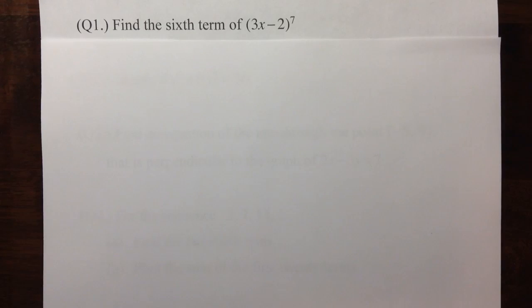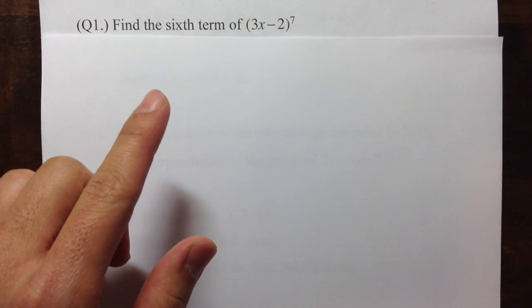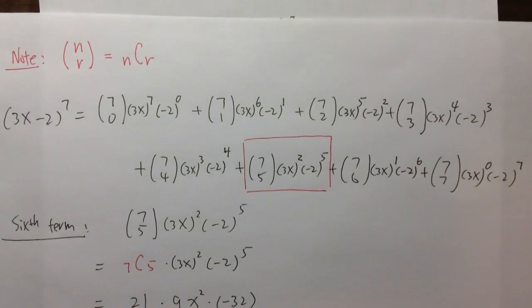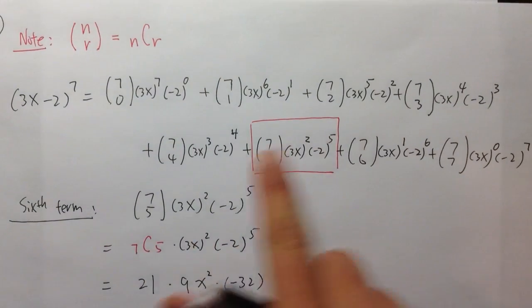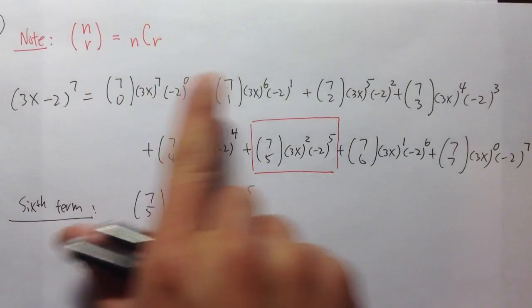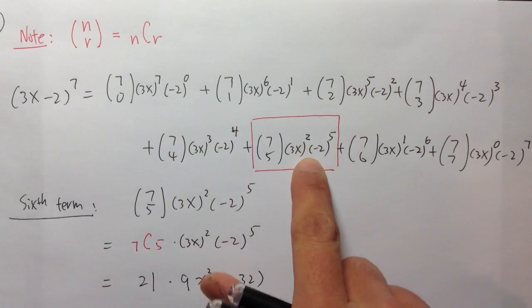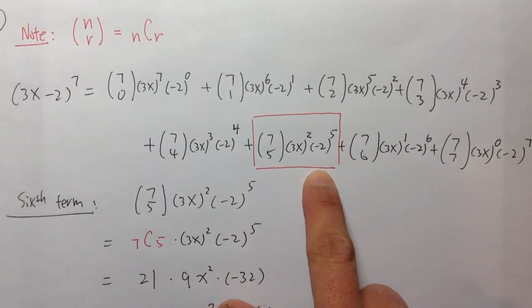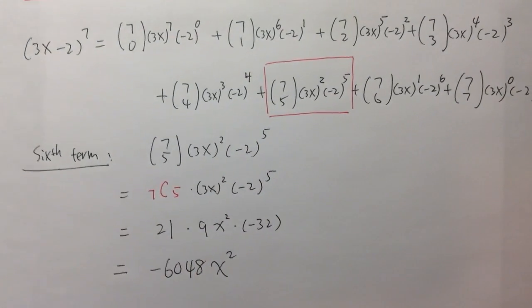Okay, earlier we have seen this question, but we did everything, right? We wrote down all the terms, and then we just count 1, 2, 3, 4, 5, 6, and this will be the 6th term, and then we do the calculations after that.